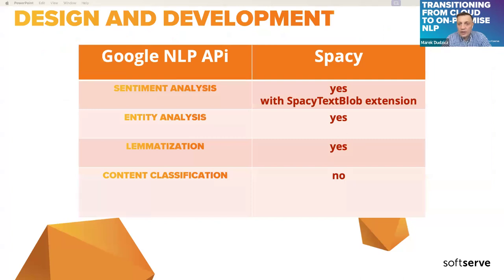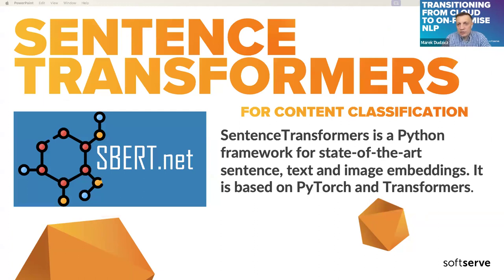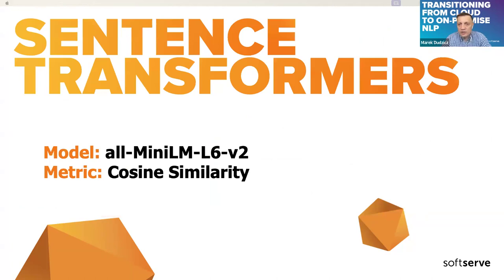Comparing Google NLP and spaCy capabilities based on the project needs: spaCy doesn't support content classification in Google NLP API's way. For content classification, I used sentence transformers, assuming no model training would be needed. I used a small model for embeddings, and cosine similarity as the metric. The idea was simple — I generated embeddings for the given text and for all Google categories, then compared them using cosine similarity.